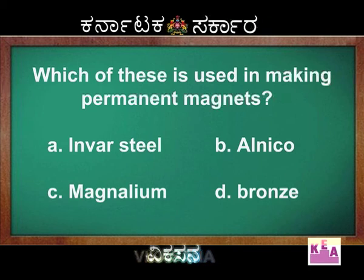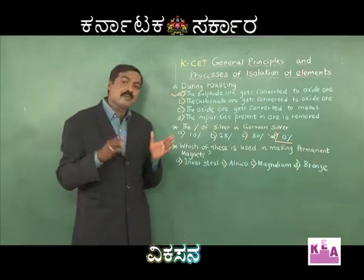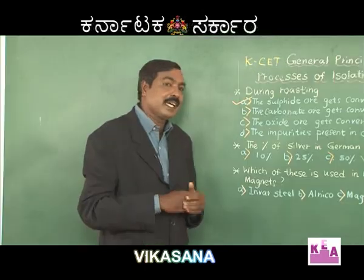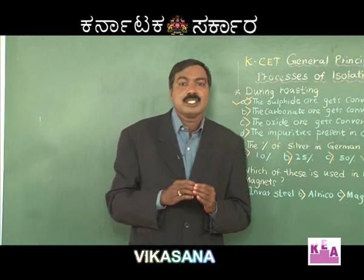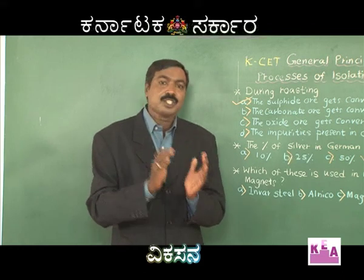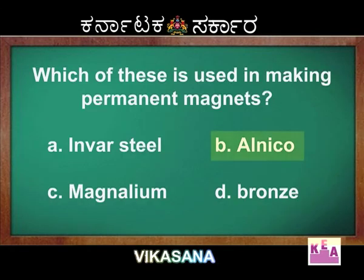Magnalium is an alloy of aluminium used in making aircraft bodies. Bronze is used in making statues. Magnalium is also used in making weighing balances. As you learn the alloys and their compositions, make a chart about their combinations and uses — it would definitely help you.